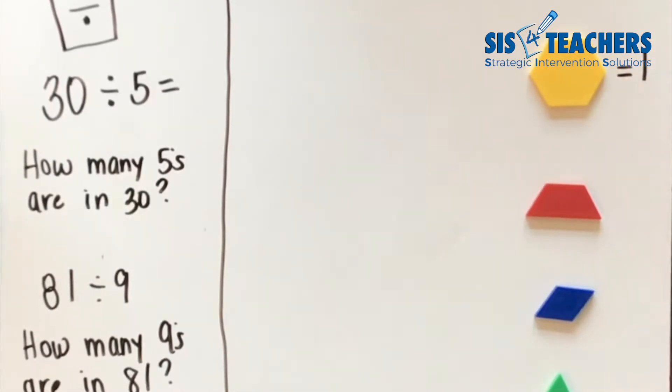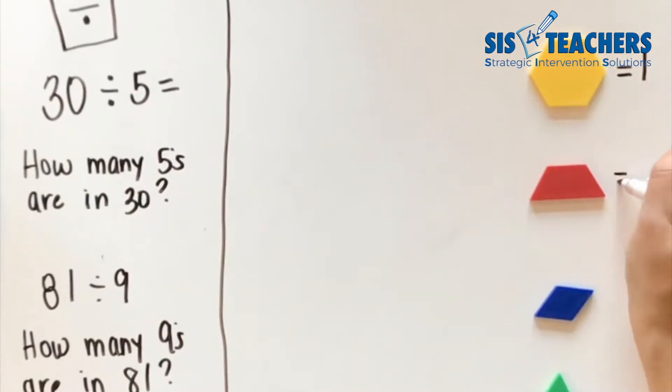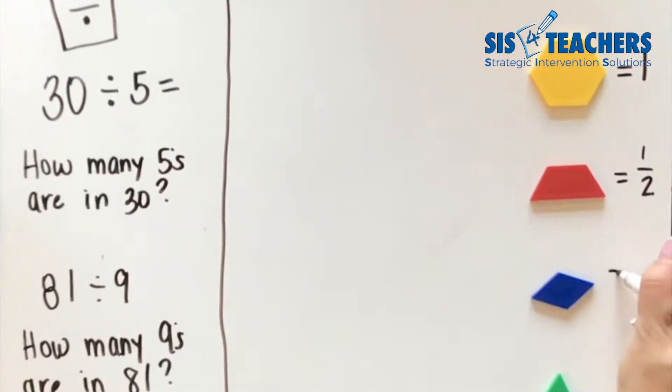We're going to have our hexagon equal to one whole. We know that we can put two trapezoids on top, so we know that those are equal to one half. Three of our rhombus will fit on top of the whole, so that is going to be equal to one third, and then for our triangles it's going to be equal to one sixth. The reason why I like using the pattern blocks for division of fractions is because it's easy for kids to see it based on a manipulative that they might be used to.